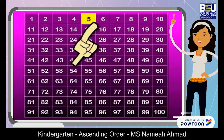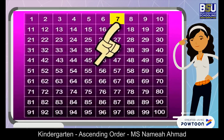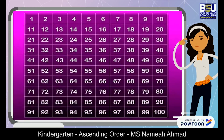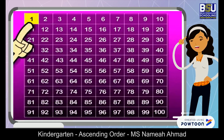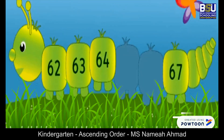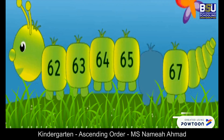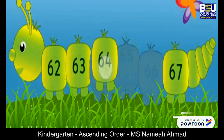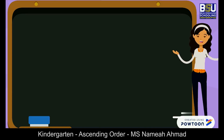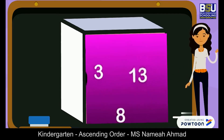Yes, I got it — we will sequence the numbers using the grid from least to greatest. All the numbers in the grid are in a sequence from one to one hundred. So if I want to sequence the numbers on this caterpillar, I will look for the numbers which come next: 64, after that 65, and next 66.